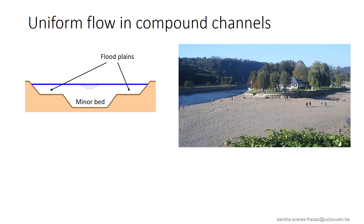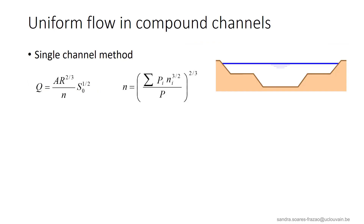Compound channels, or rivers with active floodplains, deserve particular attention. The minor bed is the part of the river where water flows even in the dry season. The floodplains are covered by water only for high discharges or in flood conditions. In general, the roughness coefficient is different in the minor bed and in the floodplains, where vegetation can grow between floods. Two different methods can be applied to calculate a uniform flow in such a compound channel.